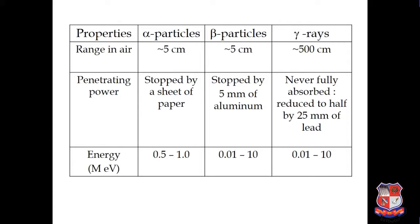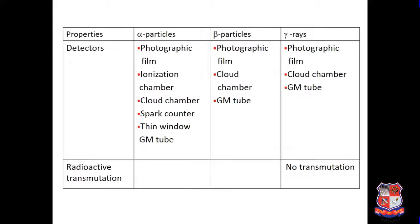I think you are aware of all properties of alpha particle, beta particle, and gamma rays. But before that, when we consider the particular detectors for alpha particle, beta particle, and gamma rays — there are some common detectors. For example, photographic film can easily identify alpha particle, beta particle, and gamma rays. The ionization chamber is only applicable to alpha particle, as it has very high ionization energy. Cloud chamber can easily identify alpha particle, beta particle, or gamma rays.